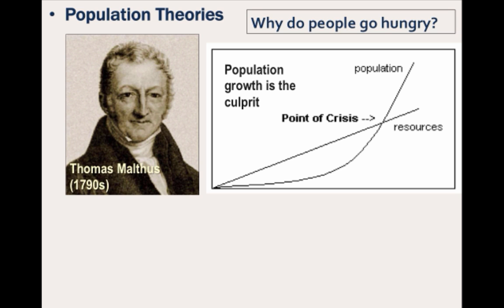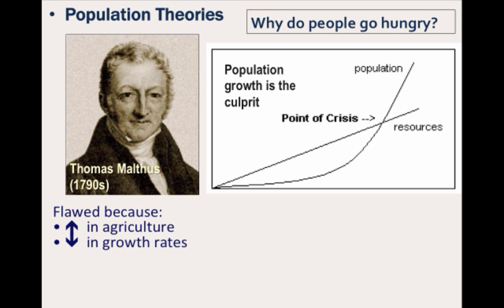Now like most theories, it's not perfect — it is flawed. For one reason, we have increased agriculture at a faster rate, such as through the Industrial Revolution and the Third Agricultural Revolution. And over time, there actually has been a decline in growth rates as people have gotten more wealthy. Also, as humans, we are able to move, so through colonization and migration, you can move away from a place that is relatively food poor to a place that is relatively food rich, or from a place without jobs to a place with jobs.